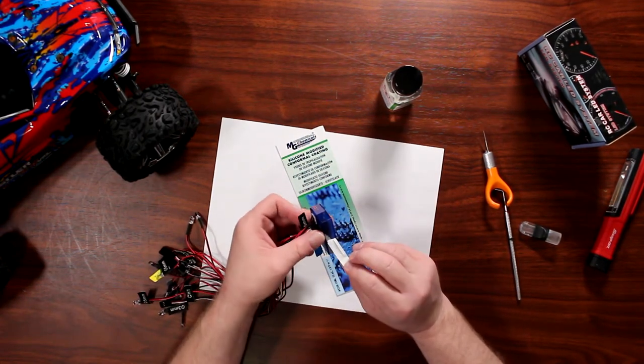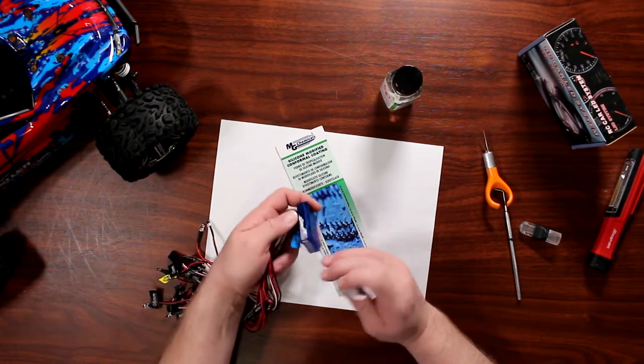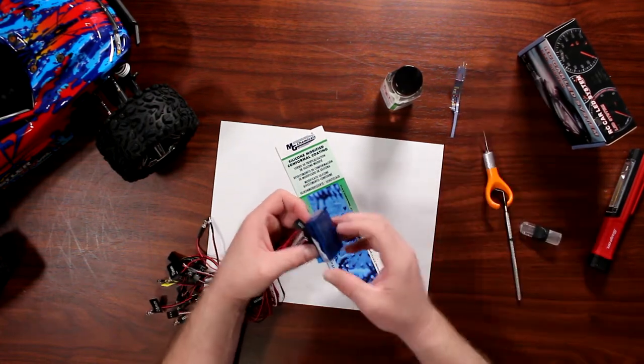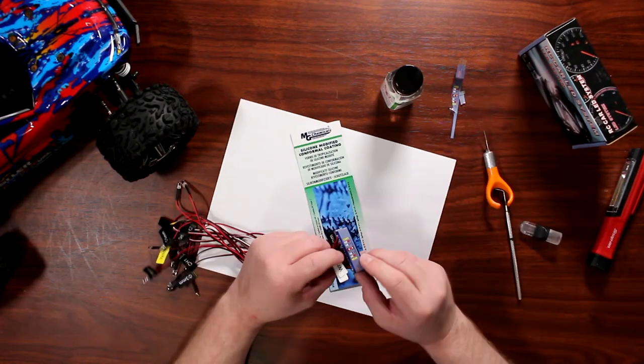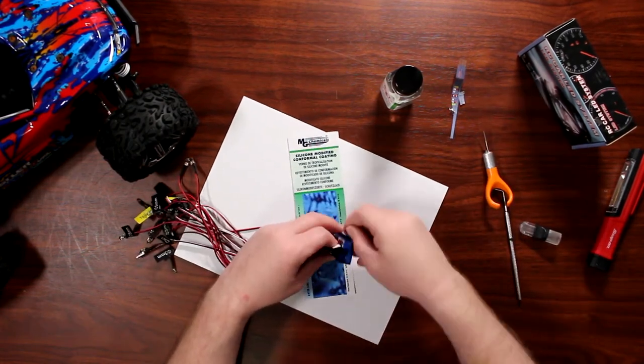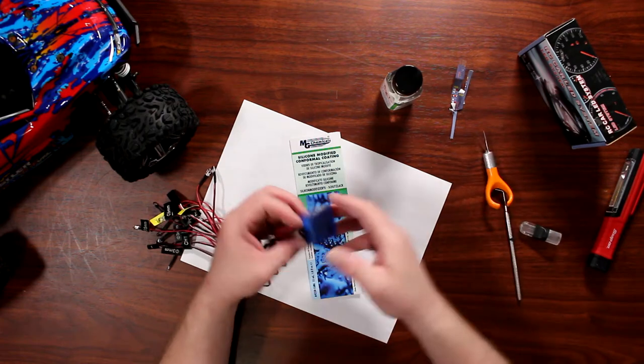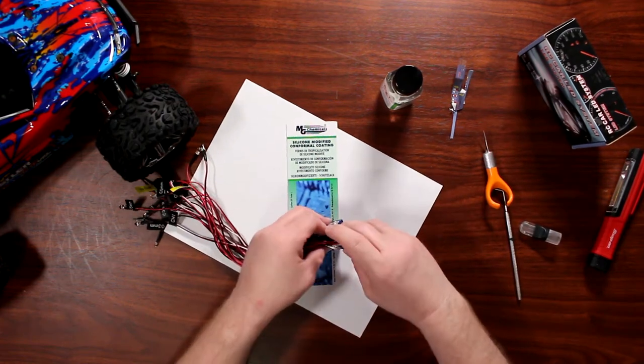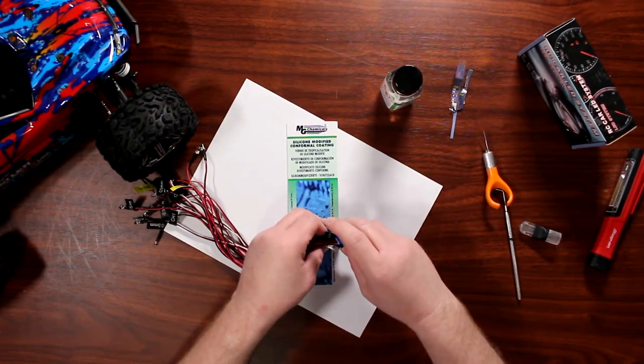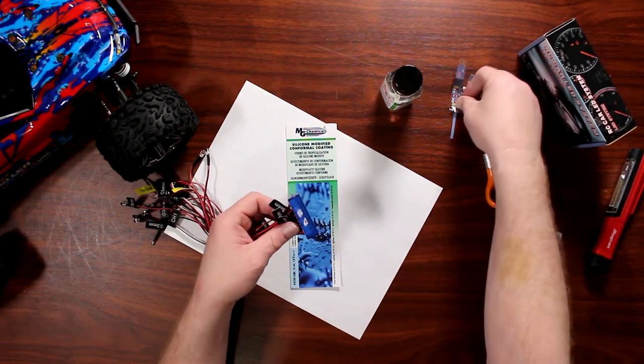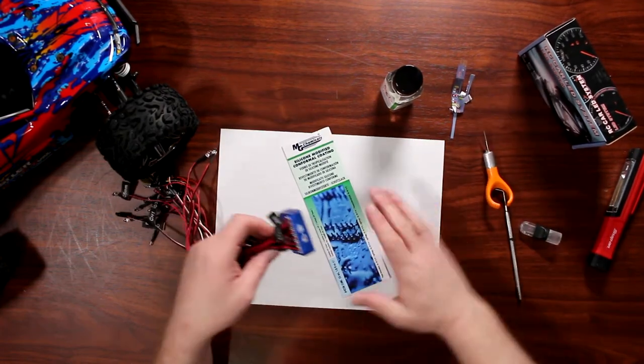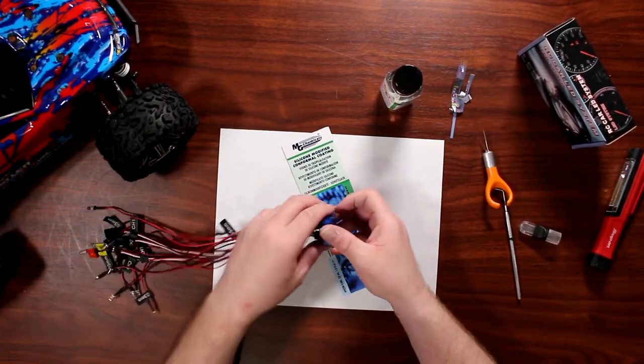Let's remove it. Now there's a couple other ways you could do it too—if you wanted to, you could use liquid tape. I do have a video on that one too, but I decided to use conformal coating on this one. It's a little bit easier.